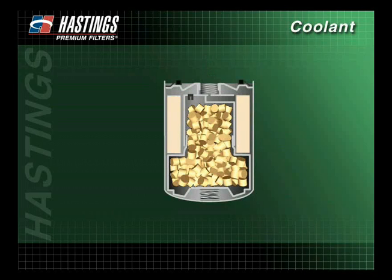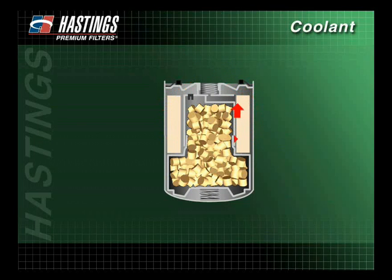When using a controlled release spin-on coolant filter, coolant enters through the inlet holes of the base plate. A majority of the coolant passes through the filter media, while a portion of the coolant enters through the diffusion control orifice.